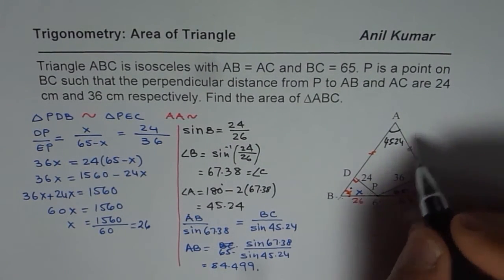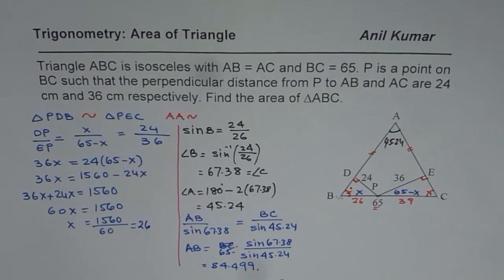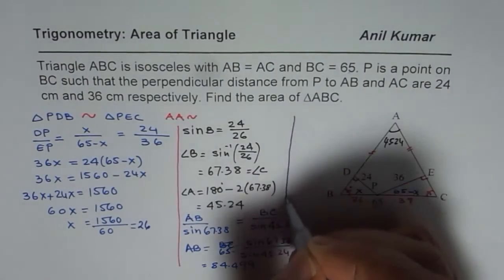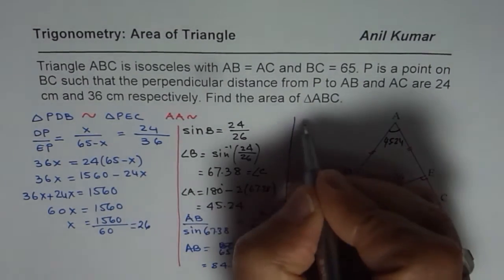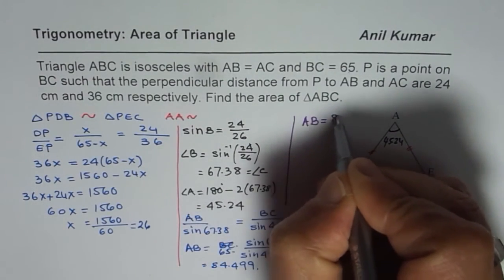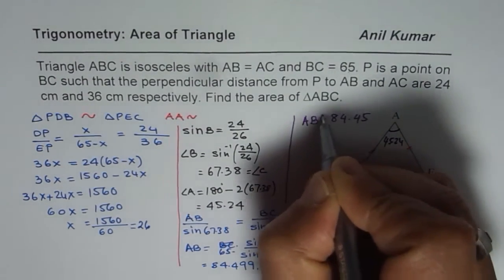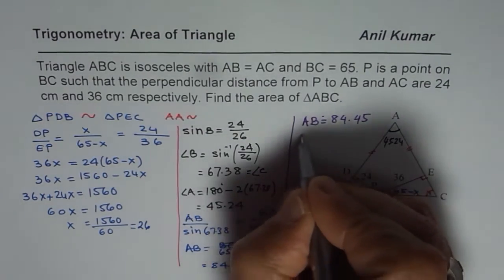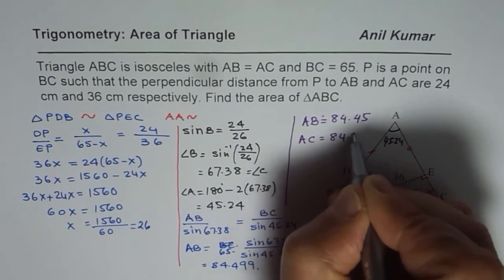So AB equals approximately 84.45, and since AB equals AC in this isosceles triangle, AC is also 84.45. We now know both equal sides of the triangle.